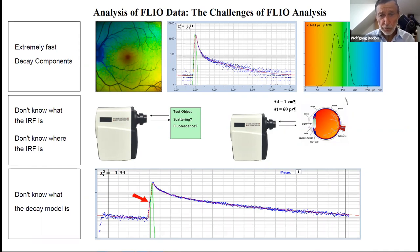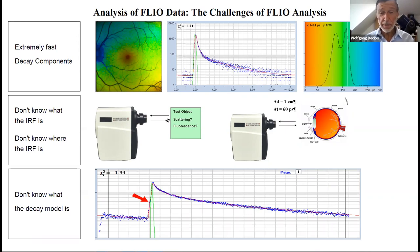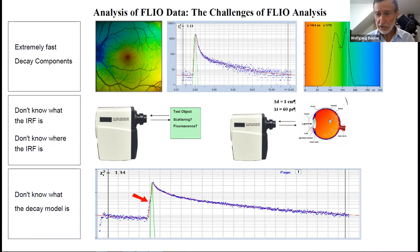Here is a typical decay curve from FLIO. The distribution of the tau M lifetime shows that even the tau M is around 150 picoseconds—terribly short. The second challenge is we don't know exactly what the IRF is. Usually the advice is to measure the IRF, but we will see this is not exactly possible. Even worse, we don't know exactly where the IRF is positioned. The distance between the scanner and the patient's eye can vary—let's say by one centimeter—which gives a delta T of 60 picoseconds. This is huge when we want to reliably measure 80 picoseconds.